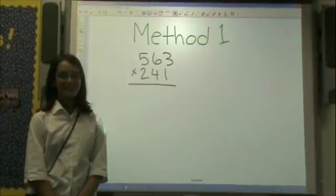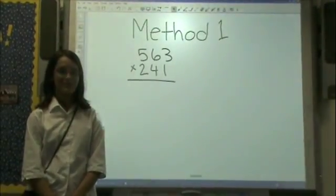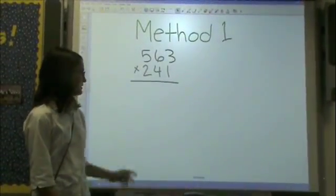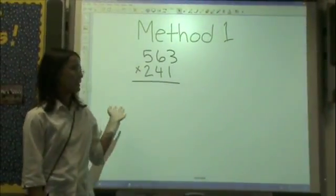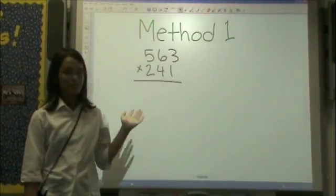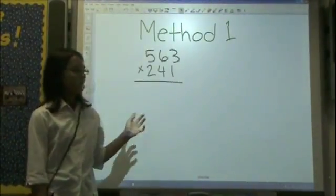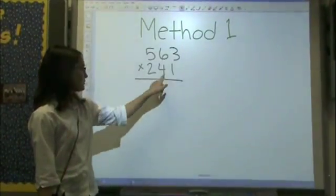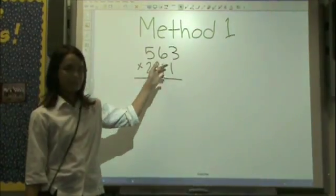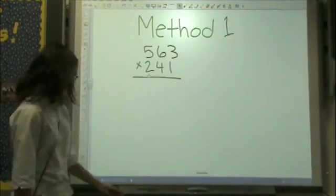There are two ways to do this type of problem, and I'll be showing you the first one. So what you do is — this is our problem — 563 times 241. What you do is you take each part of the bottom number and multiply it by the top number separately, like this.